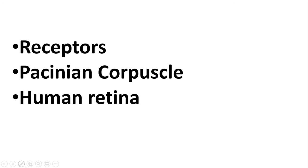So this is the basic structure of the video today. We are going to cover receptors — what are receptors and what do they do? Then we are going to cover two types of receptors: the Pacinian corpuscle, and then the two types of photoreceptors, which are receptors for light in the human retina.